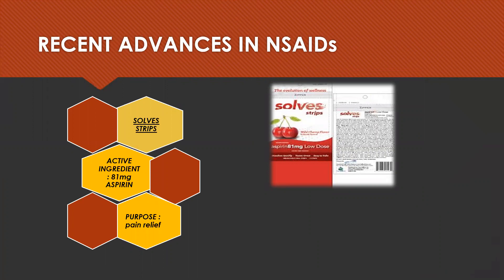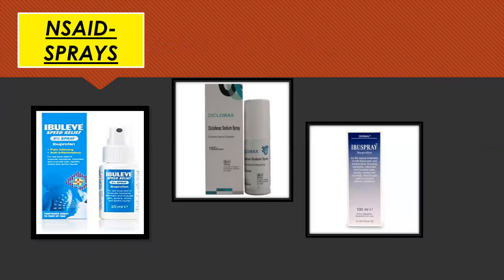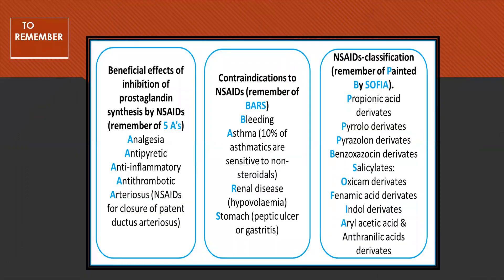Recent advances in NSAIDs include NSAID strips and NSAID sprays. In NSAID strips, the active ingredient is 81 mg aspirin, with the sole purpose of pain relief. Here are some easy ways to remember important things: to remember the beneficial effects of NSAIDs, remember the five A's; for contraindications of NSAIDs, remember the word BARS; and to remember the NSAID classification, use the mnemonic SOFIA.